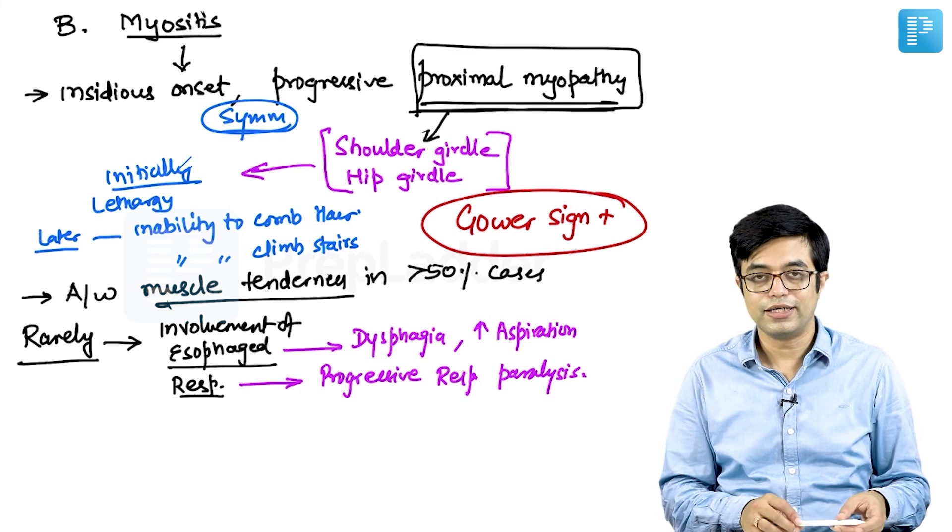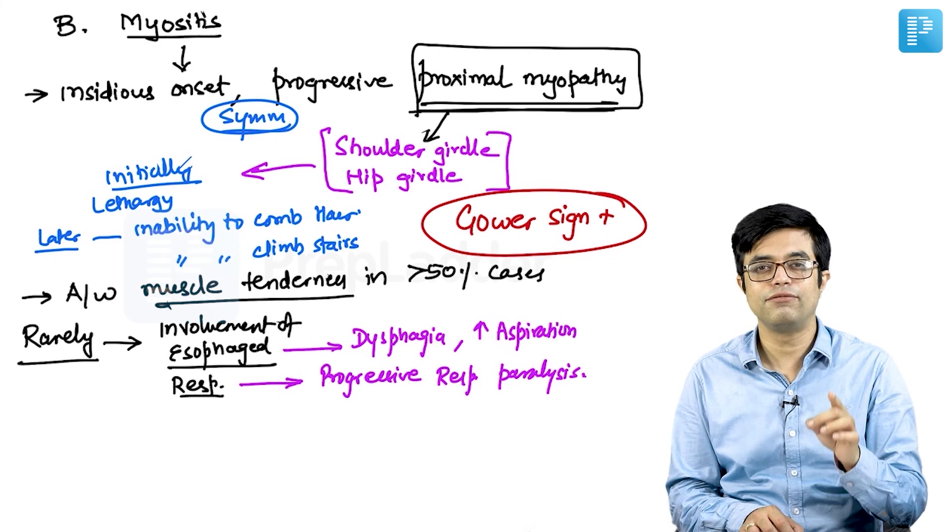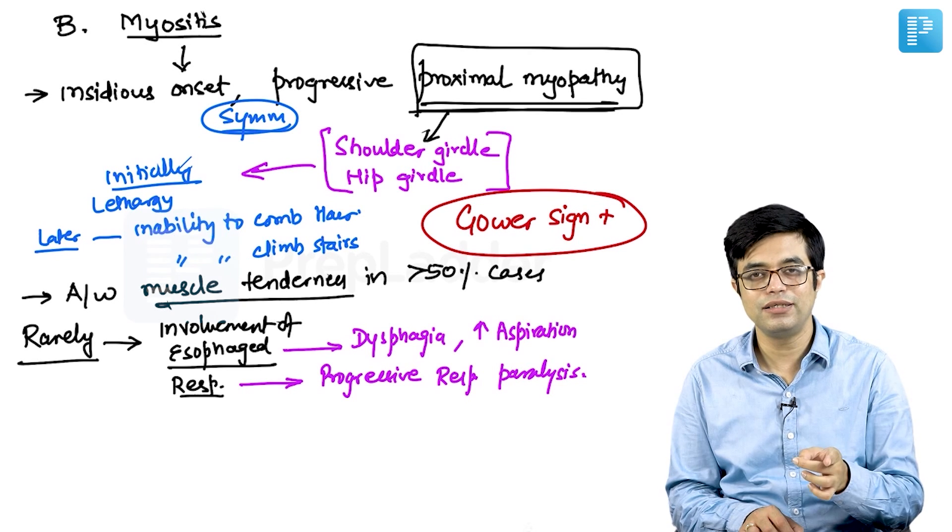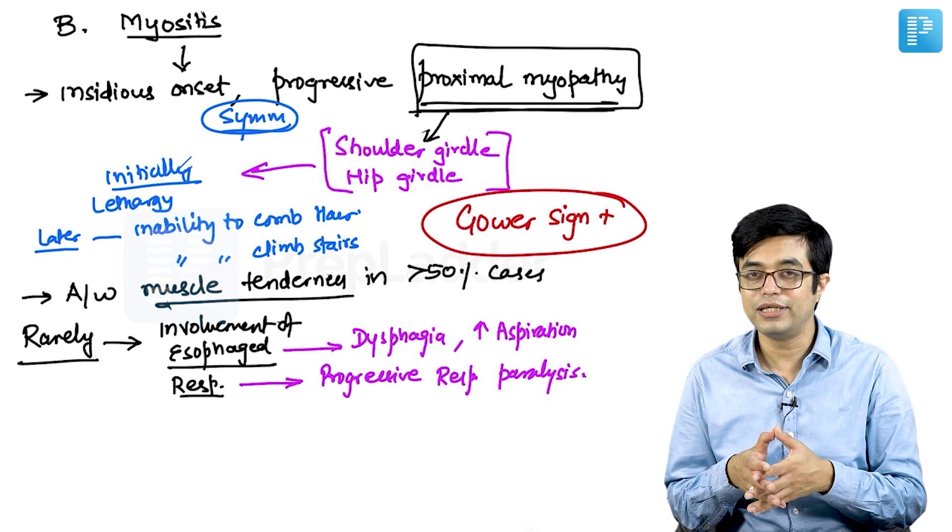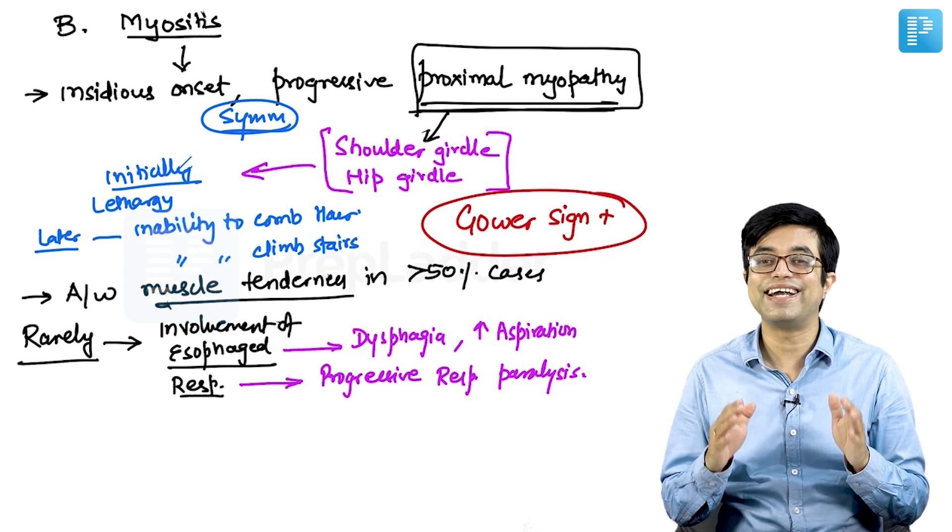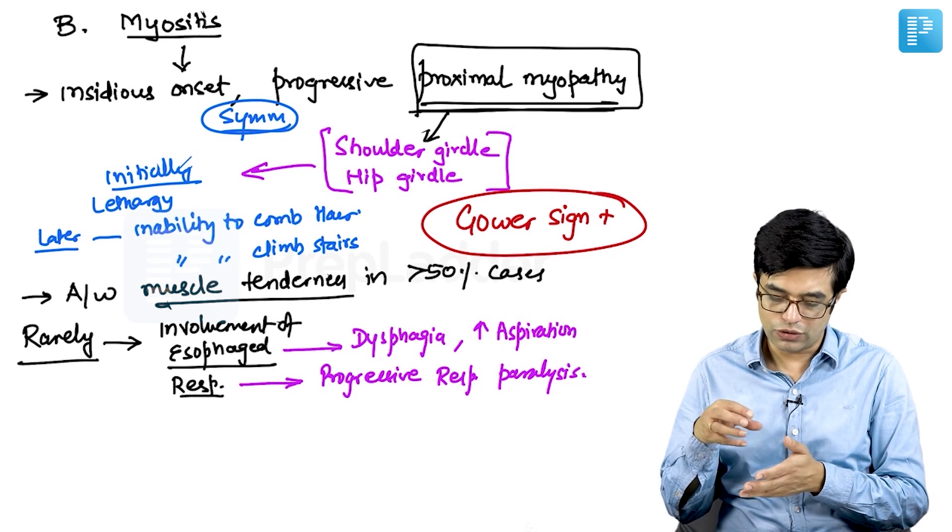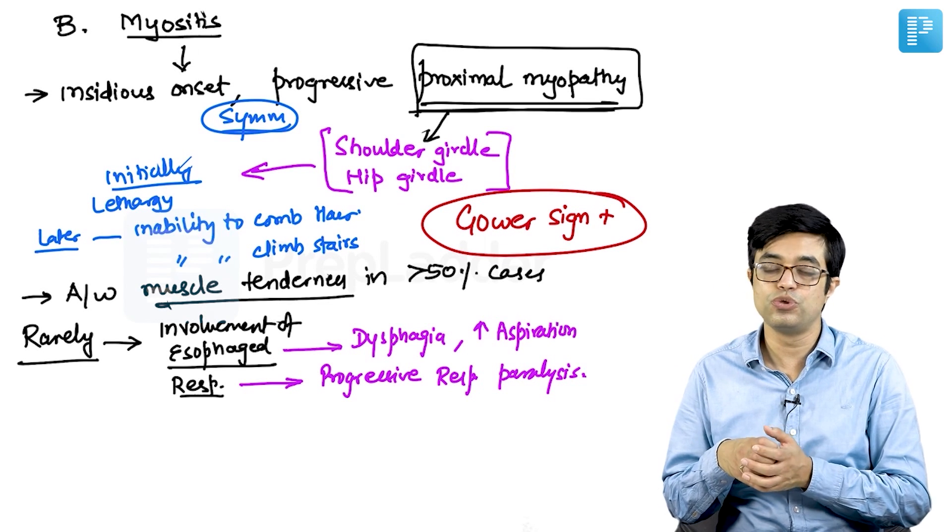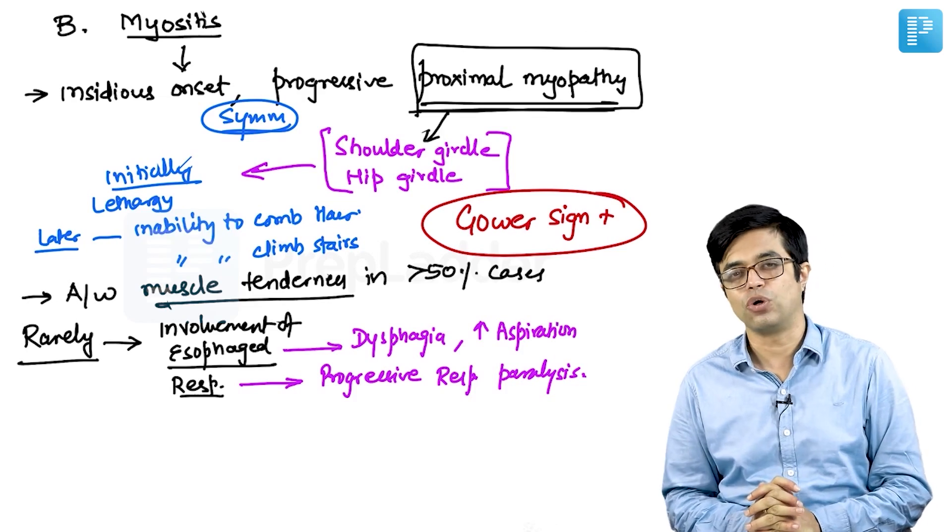To summarize, there are skin involvement and there is muscle involvement. Muscle involvement is in the form of proximal myopathy, there is Gower sign positivity, it affects shoulder and hip girdle commonly and it is associated with tender muscles. Other muscles which can be involved include esophageal and respiratory which usually portend a more poor prognosis as compared to if they are not involved.